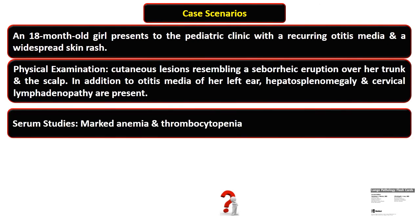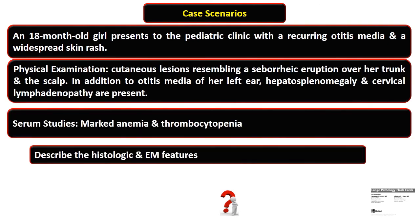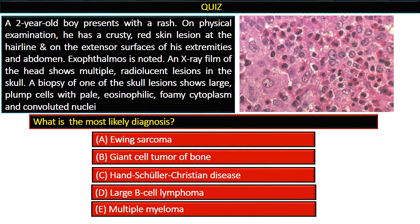Now you should be able to answer the scenario discussed at the start. Here is a quiz: a two-year-old boy presents with a rash. On physical examination, he has a crusty discoid lesion at the hairline and lesions on the extensor surface of his extremities and abdomen. Exophthalmos is also noted. X-ray of the head shows multiple radiolucent lesions in the skull. Biopsy shows multiple plump cells with pale eosinophilic and foamy cytoplasm, convoluted nuclei, and many eosinophils. The likely diagnosis is Hand-Schüller-Christian disease.